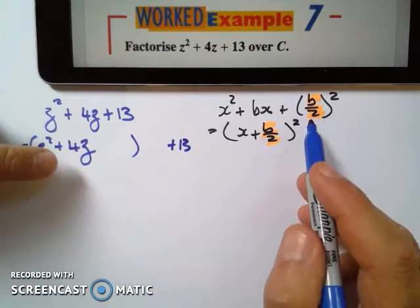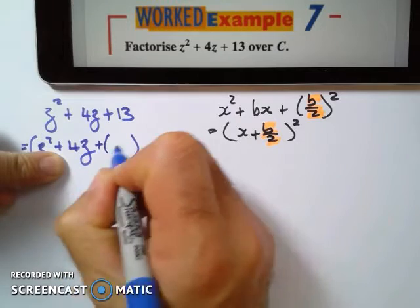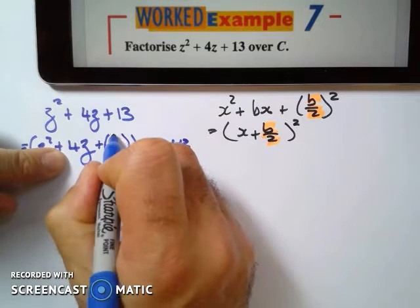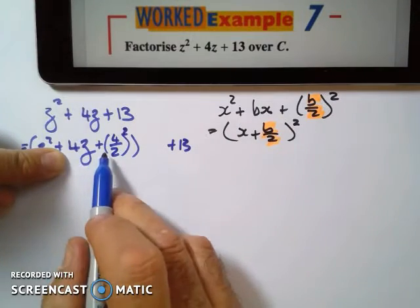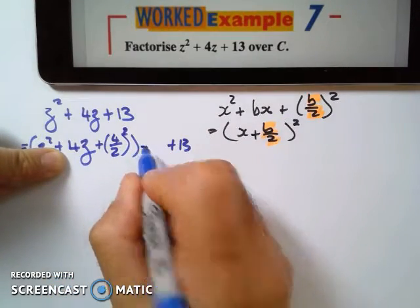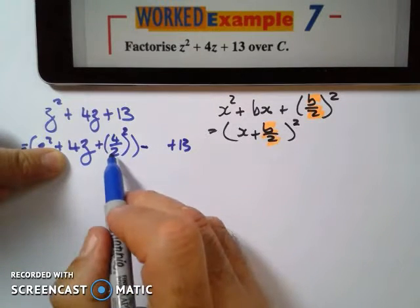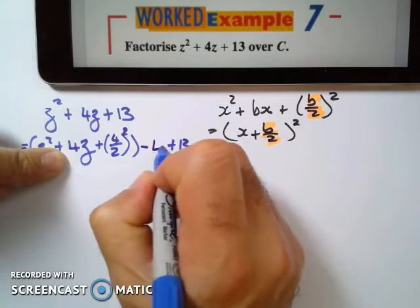To do that I'll have to take 4, the b, and divide it by 2. So it's going to be plus and what I'm going to do is I'm going to take the 4, divide it by 2 and I'm going to square it. But if I add it here I must also subtract it otherwise I'm changing the value. So I'm going to subtract 4 divided by 2 is 2 and 2 squared is 4.